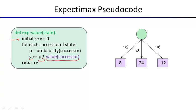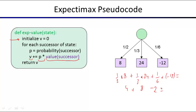Here's an example with weights of one-half, one-third, and one-sixth, with some utilities below. This results in an average of one-half times 8, plus one-third times 24, plus one-sixth times negative 12, which gives four plus eight minus two, equaling 10. So the value at that node is 10 — that's the expectimax value for that particular node.